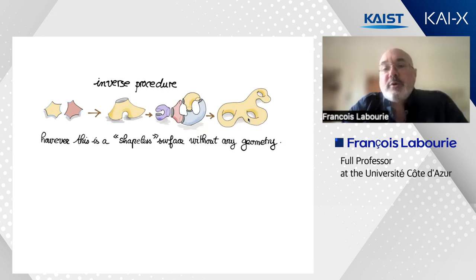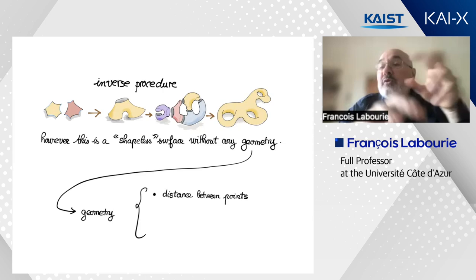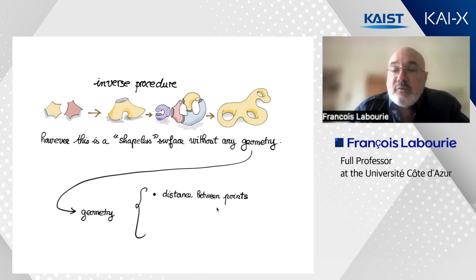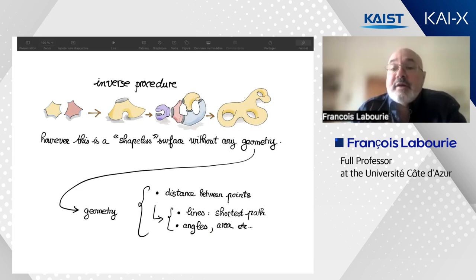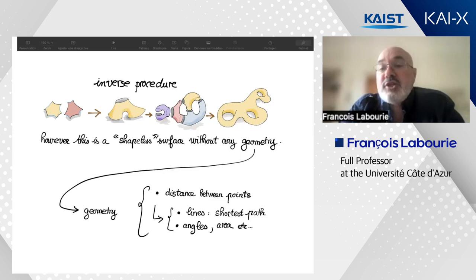So far these surfaces are shapeless — without any geometry, you can deform them. What do I mean by geometry? Geometry means considering the surface as a metric space, where I can define a distance between points. I also want something like Euclidean geometry from school: notions of points and lines as shortest paths, as well as angles and triangles — lines, angles, and triangles.